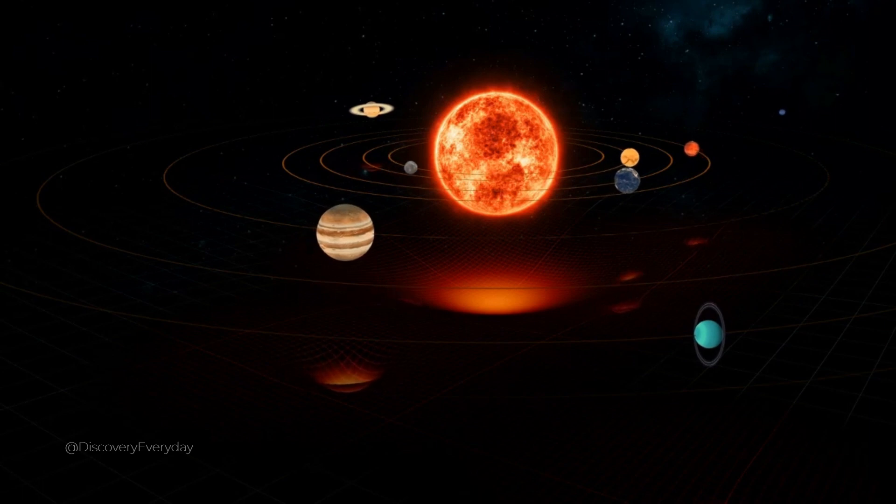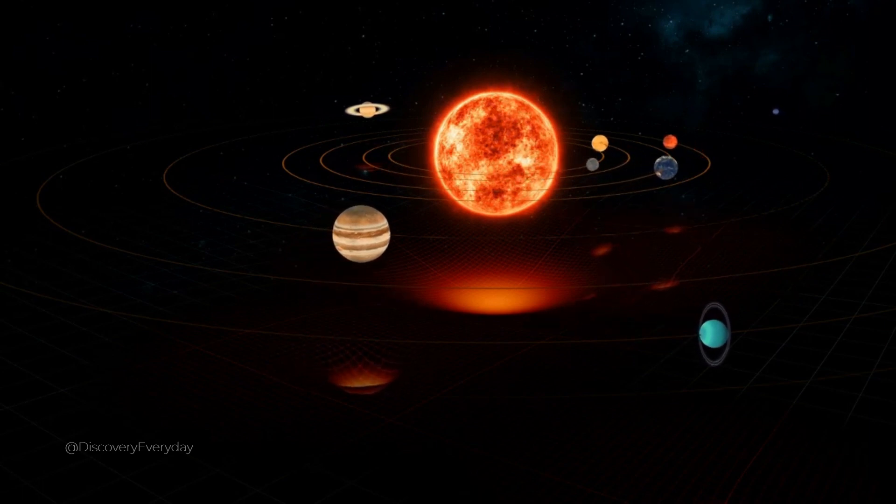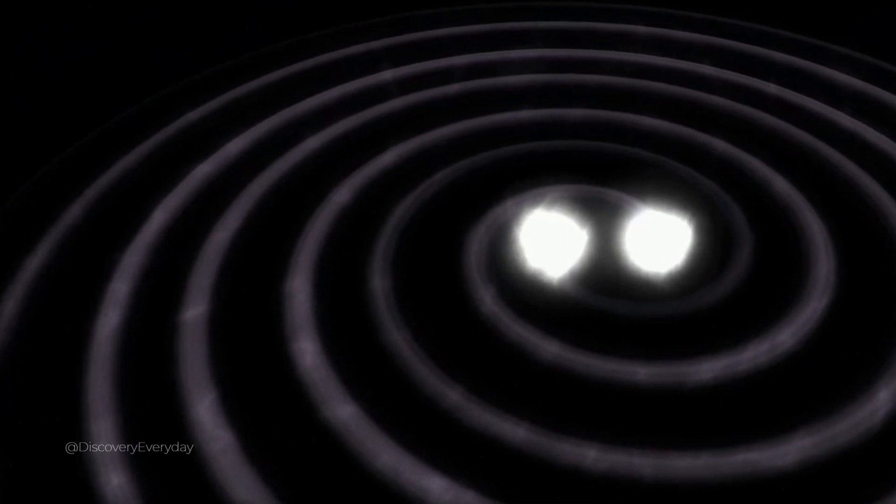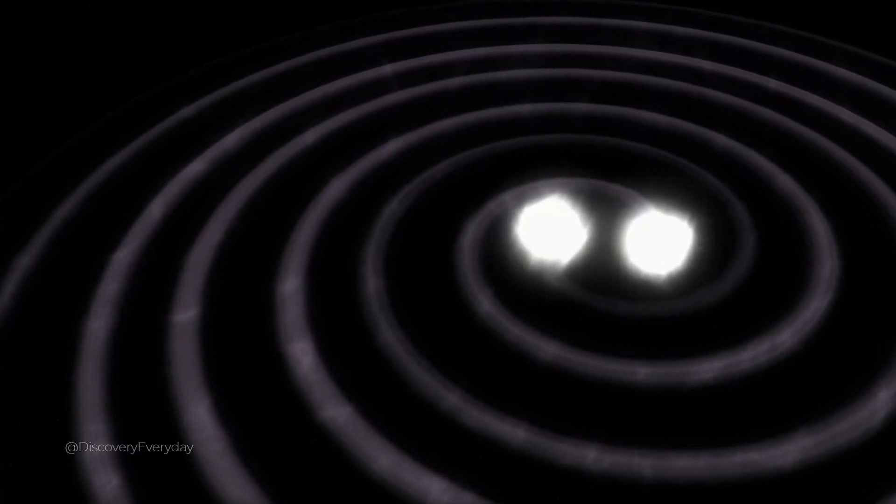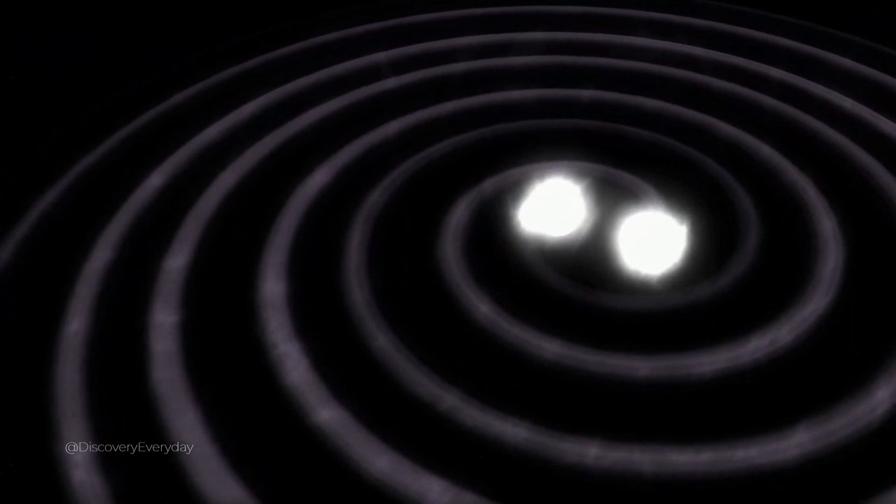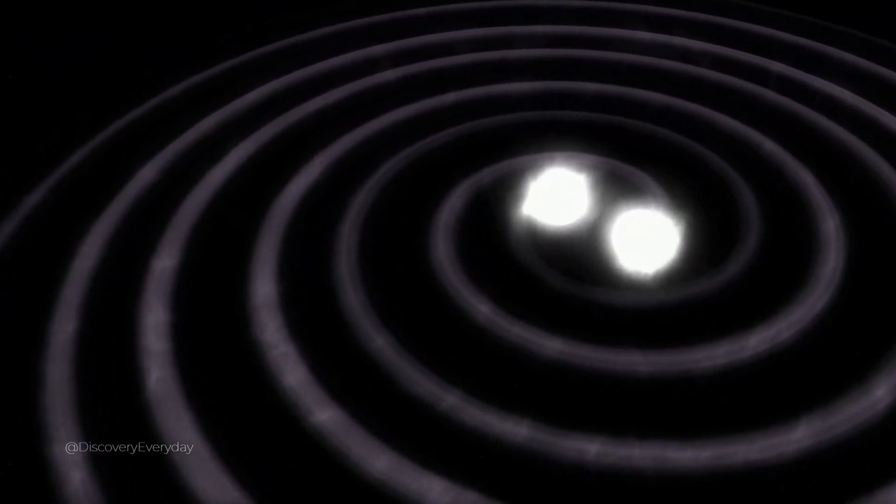It correctly describes the bending of starlight by gravity, the orbital decay of binary pulsars, and the warping of spacetime around a black hole. That's why general relativity is currently physicists' best theory of gravity.